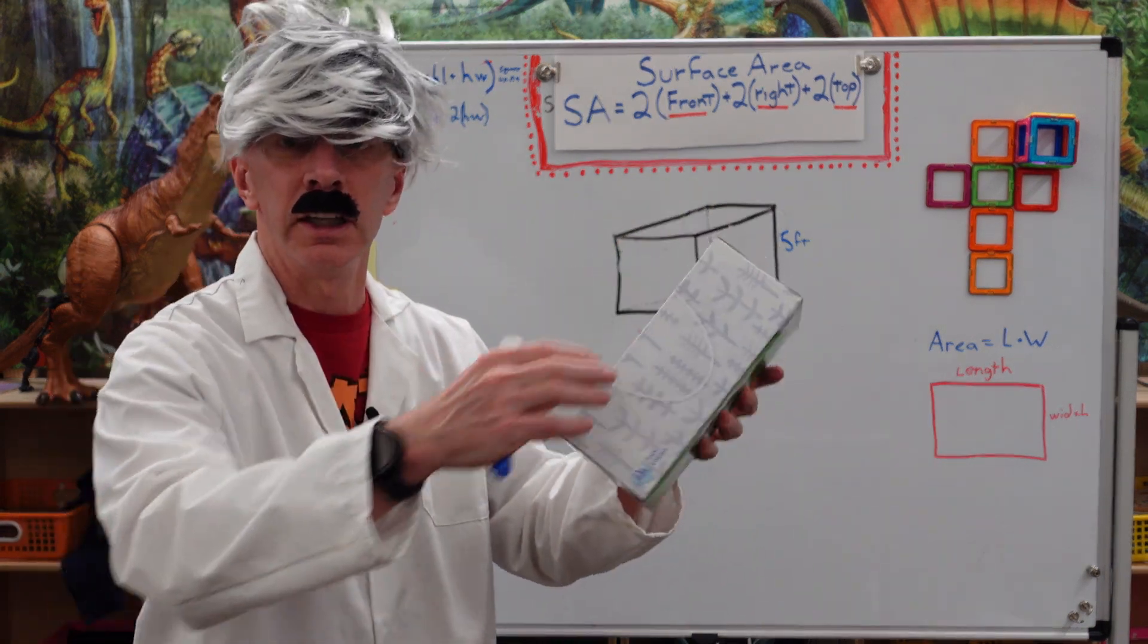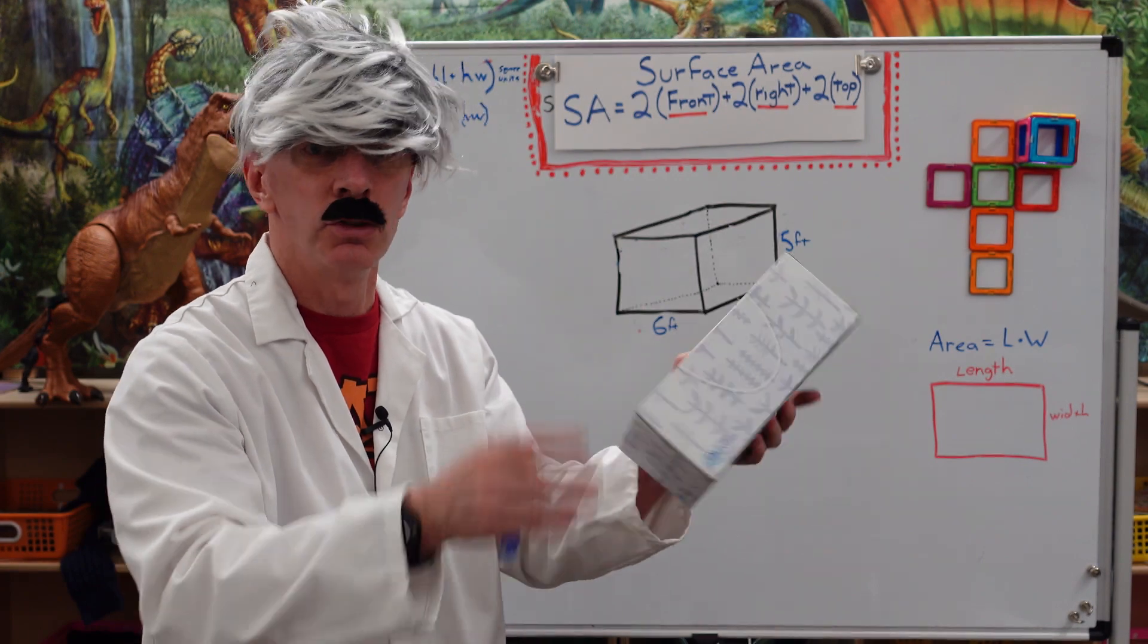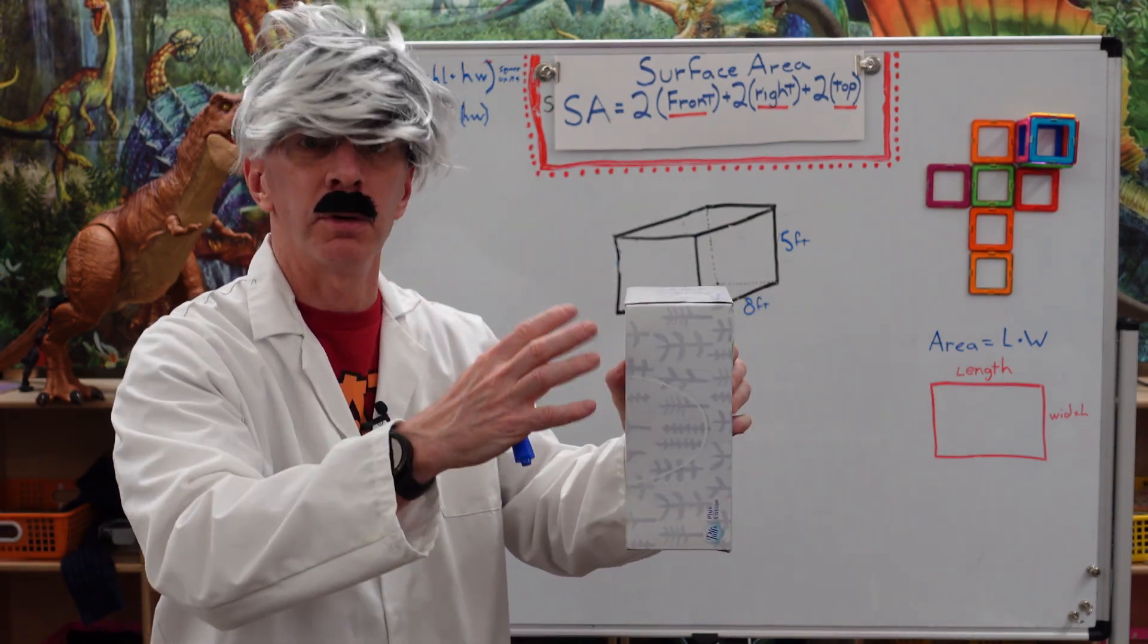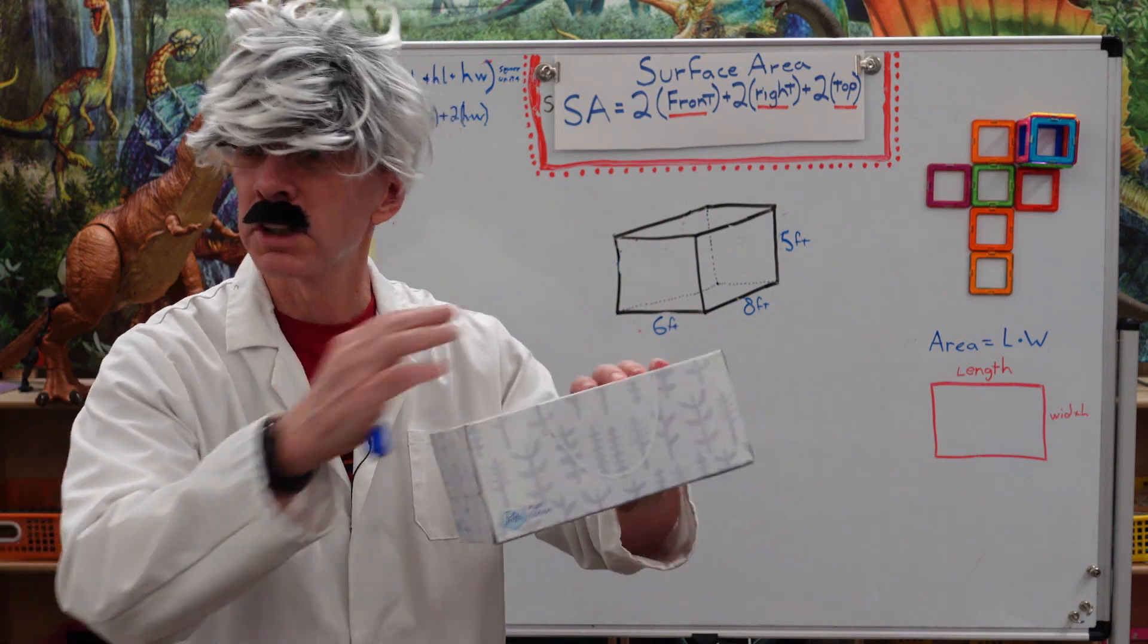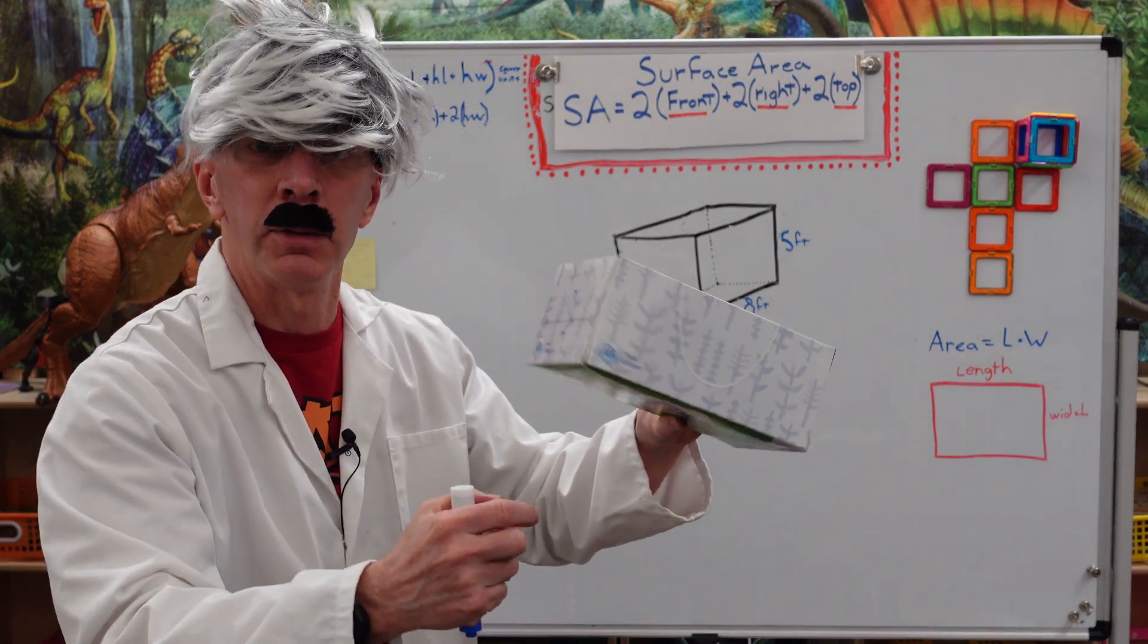I know you're saying it's a Kleenex box. No, this is a shape of a rectangular prism. I know it's a Kleenex box, this rectangular prism.